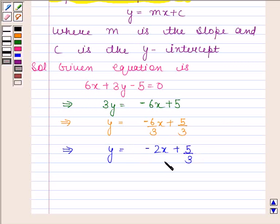Clearly this equation is of the form y equals mx plus c. This is the slope-intercept form of the given equation. Let's name this equation as equation number 1. Now we will find its slope and y-intercept.